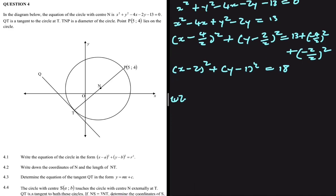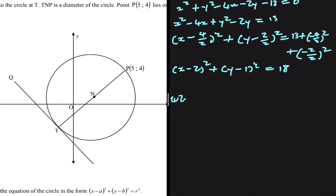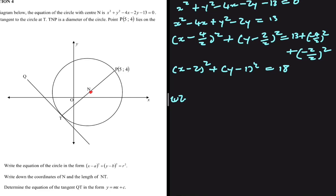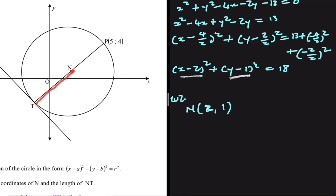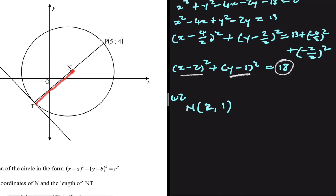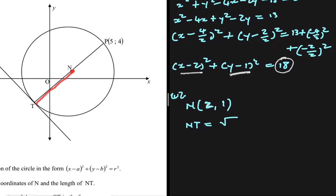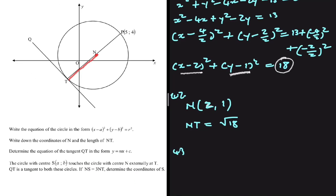Write down the coordinates of N and the length of NT. N is the center of the circle and NT is the radius. From our equation, the x-value is 2 and the y-value is 1, so the center N is (2, 1). For NT, since 18 is the radius squared, NT equals the square root of 18. Let's move to 4.3.